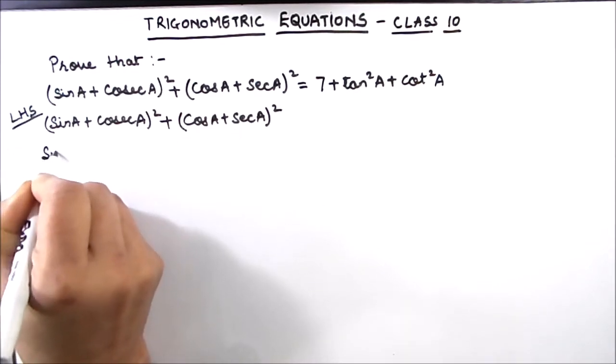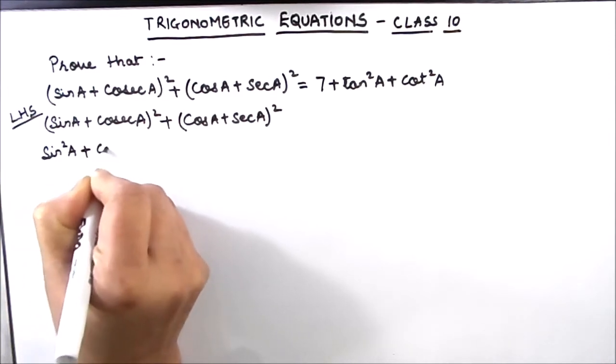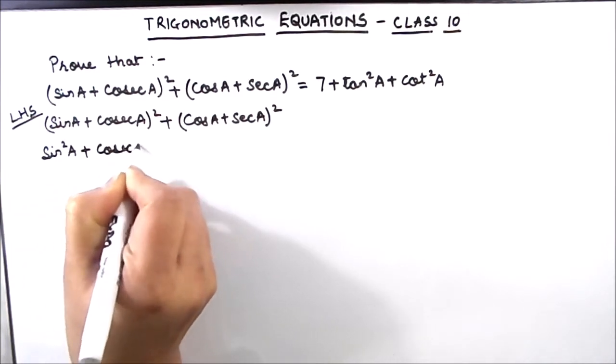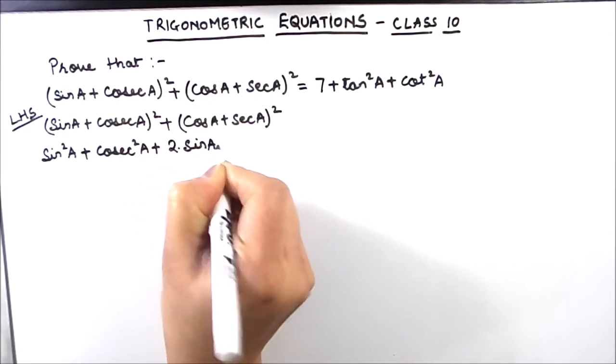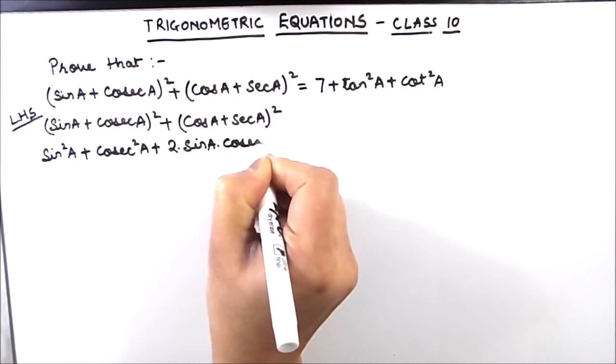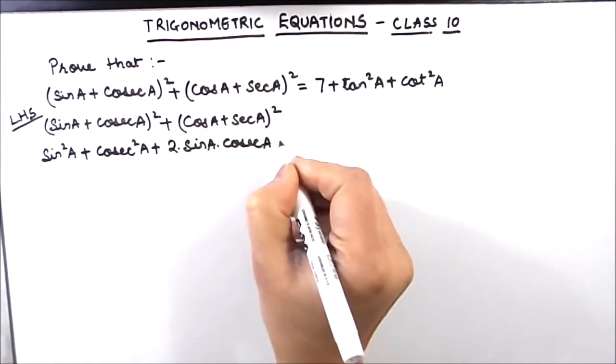So this will be sin² A + cosec² A + 2 times sin A times cosec A. Same we will do with the second expression.